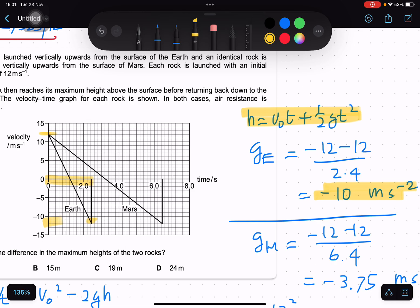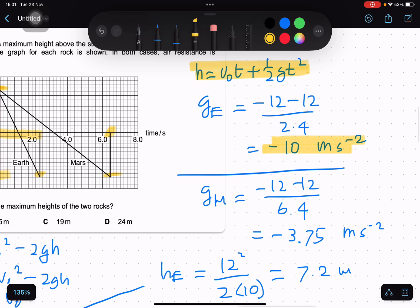Now for Mars, same approach: delta v is 12 minus negative 12, divided by time 6.4, so we get 3.75 meters per second squared.